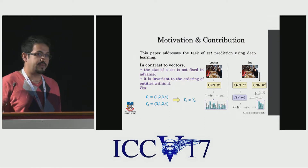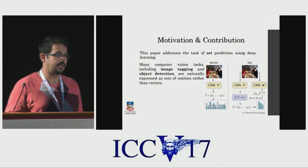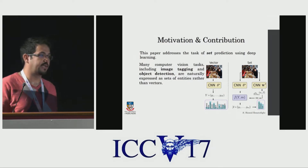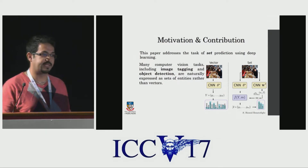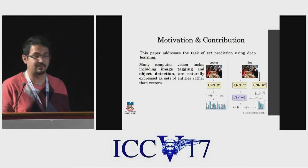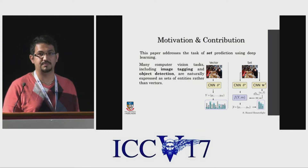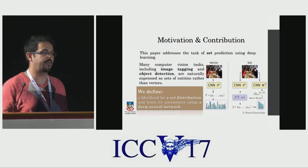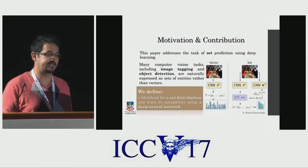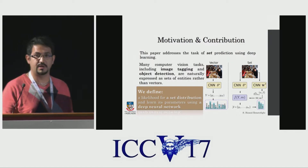We believe that many computer vision applications, including image tagging and object detection and many more, are naturally expressed as a set of entities rather than as vectors. In order to deal with this problem in a principled way, we propose to predict the set and define a likelihood for the set distribution, learning these parameters using a deep neural network.